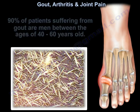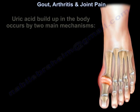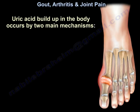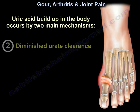90% of patients suffering from gout are men between the ages of 40 to 60 years old. Uric acid buildup in the body occurs by two main mechanisms: one is excessive urate production, and the second is diminished urate clearance.